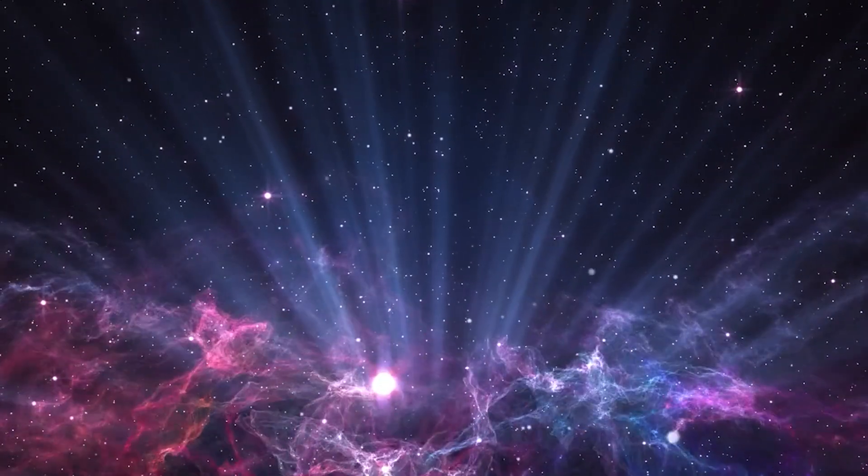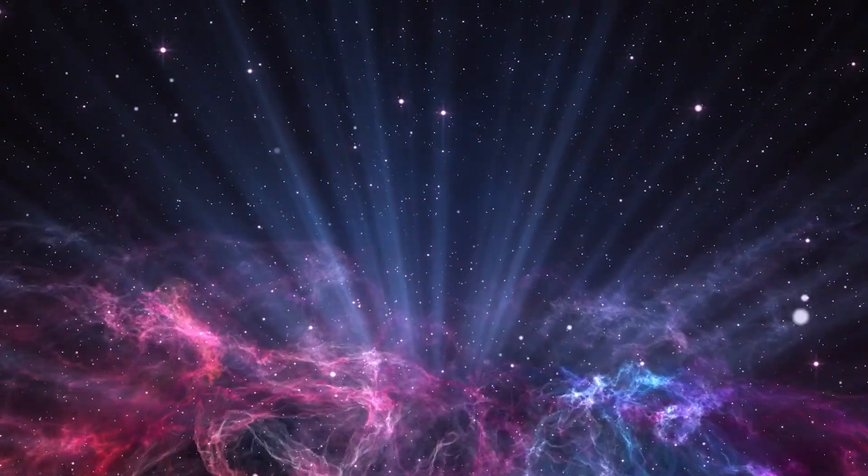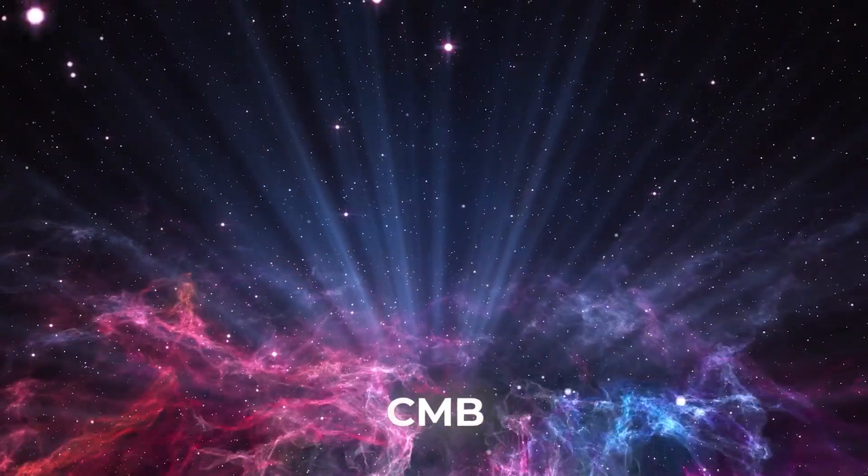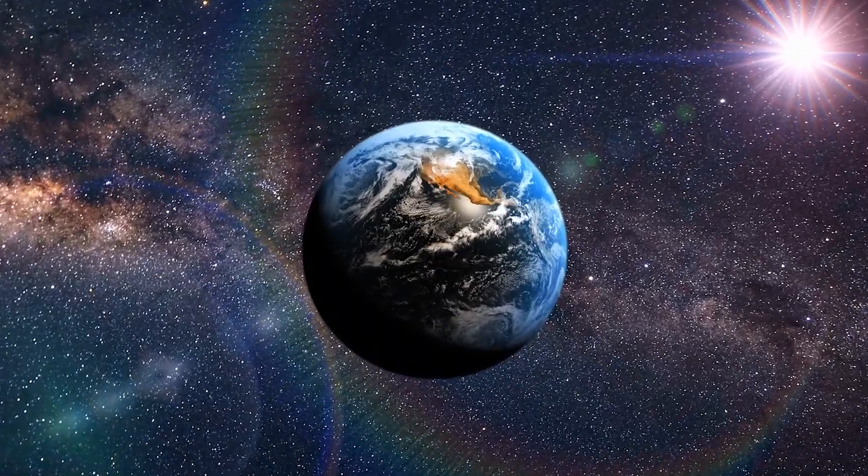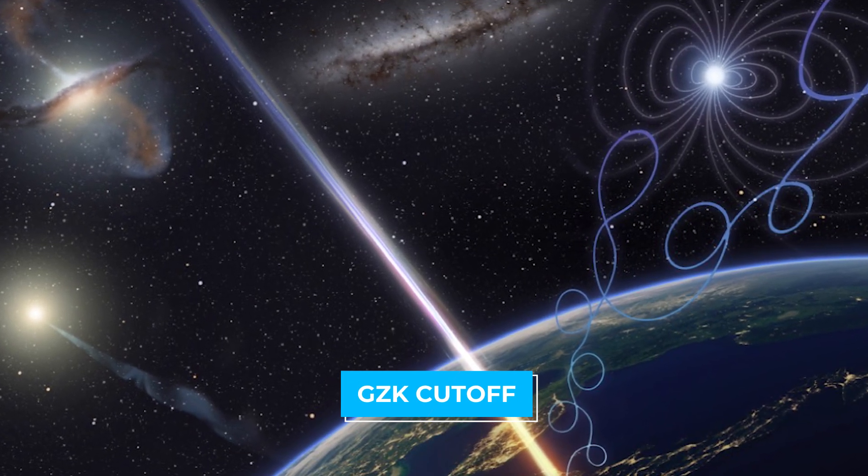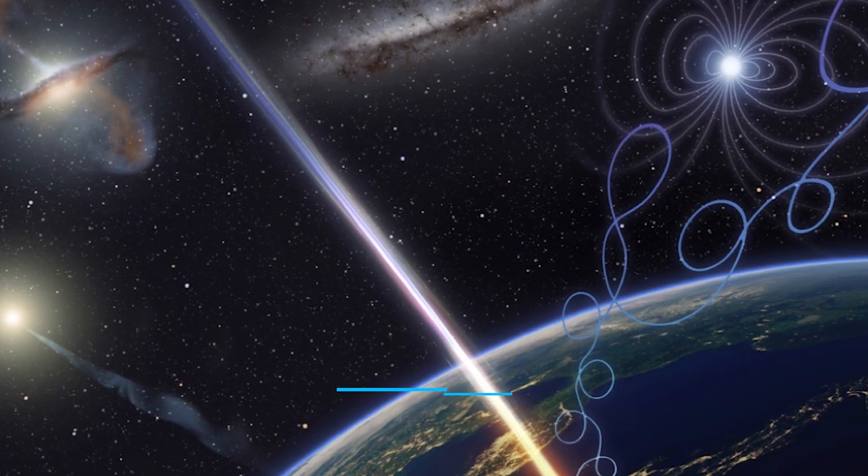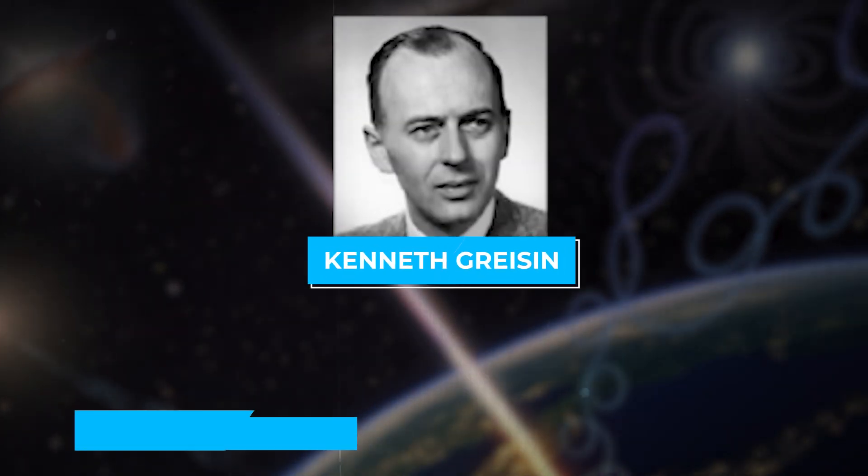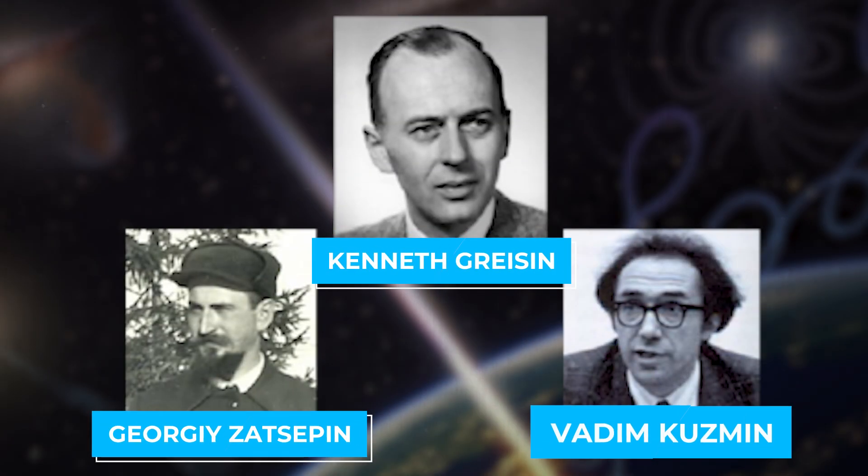This is because of the cosmic microwave background radiation, the glow from the Big Bang discovered in 1964. Any cosmic rays traveling farther than that would be destroyed by interactions with the CMB before reaching detectors on Earth. This limit is called the GZK cutoff after the scientists who suggested it: Kenneth Grayson, Georgie Zetsepin, and Vadim Kuzman.